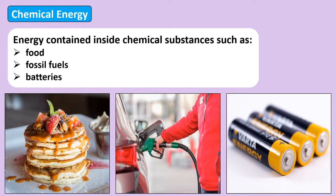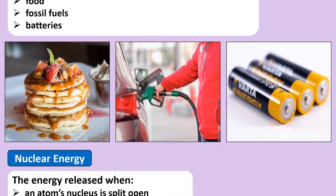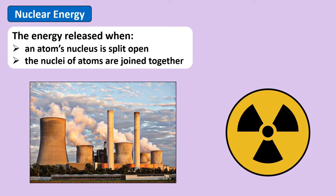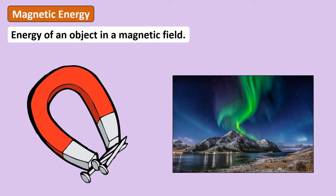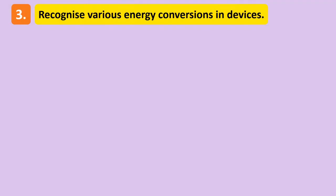Inside our cells during respiration, chemical energy is released from the food we eat. Nuclear energy is the energy stored inside the nucleus of an atom, and can be released by either splitting the nucleus apart or by joining nuclei together. Finally, magnetic energy is the energy an object has while it's in a magnetic field — when an object is moving towards a magnet, it possesses magnetic energy. A key thing to point out is that energy constantly changes or converts from one of these nine forms to another.